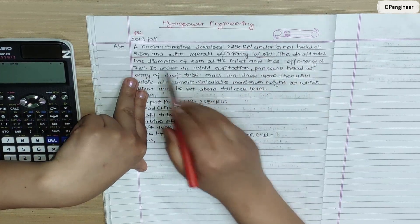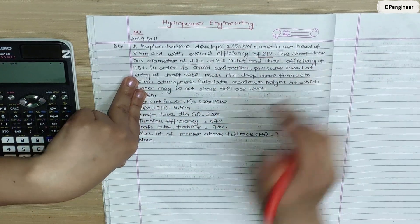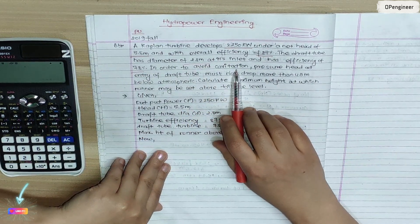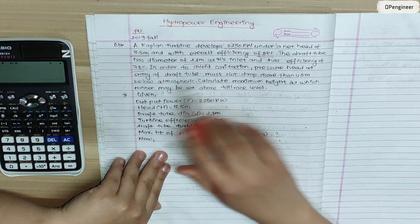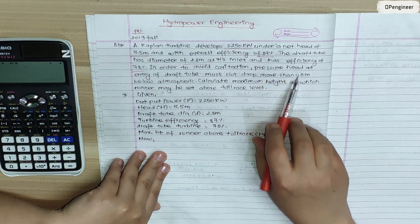The draft tube has diameter of 2.8 m at its inlet and has efficiency of 78%. In order to avoid cavitation, pressure at the entry of draft tube must not drop more than 4.5 m.